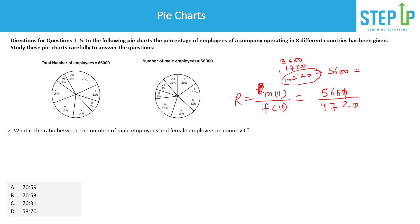So the ratio is 5,600 to 4,720. We can divide both by 8, giving us 700 to 590, which simplifies to 70 to 59. So the answer is 70:59. The key insight for this question is recognizing that female employees in a country equals total employees minus male employees in that country.